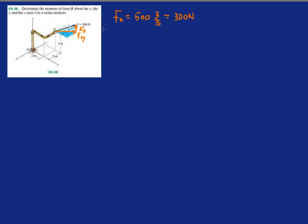Now let's find what FXY is. FXY will be 500 times 4 over 5 because the 4 is the side that is parallel to the FXY vector. So this is 400, perfect.